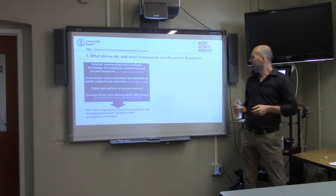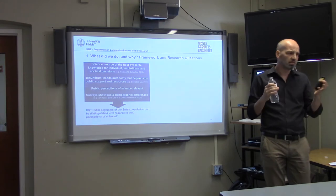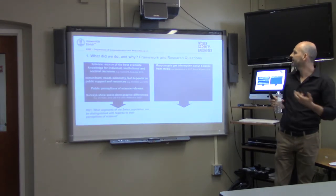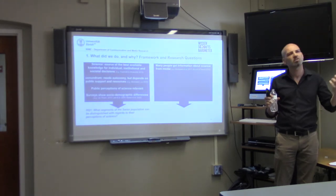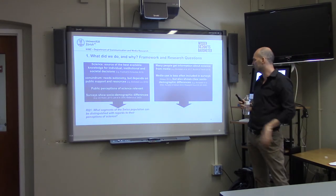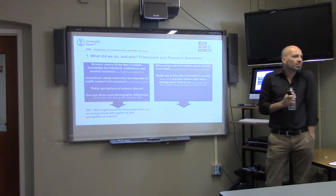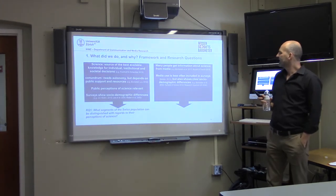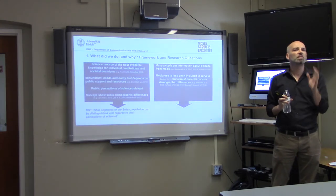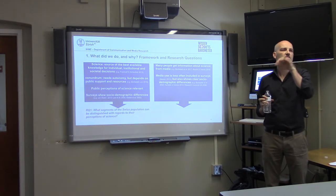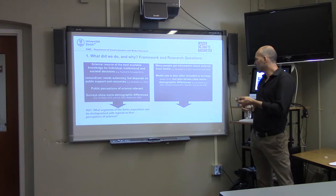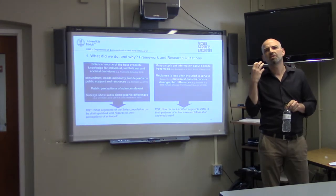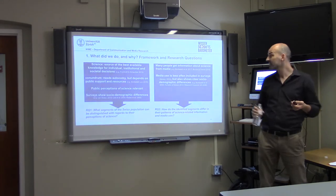That's the first research question. The second research question: many people get their information about science from the media — not only news media anymore but different kinds, including online media. Media use is not often included in the same surveys that examine attitudes towards science, and when it is, it often shows that media use differs strongly among people with different degrees of interest in science. So we were interested in whether, if we can identify segments, do they differ in their patterns of media and information use towards science?